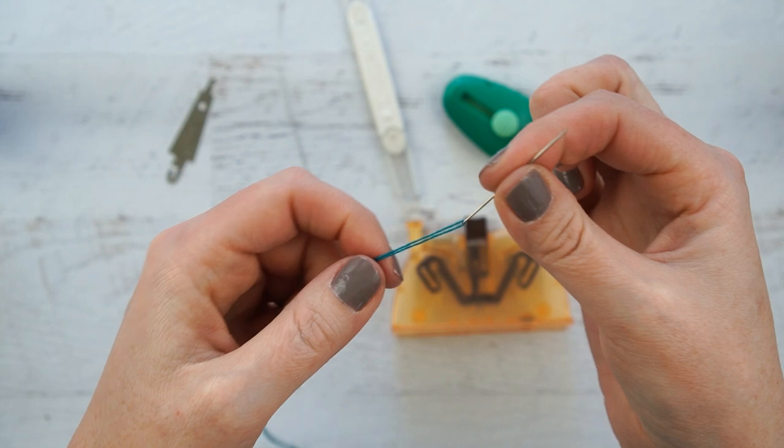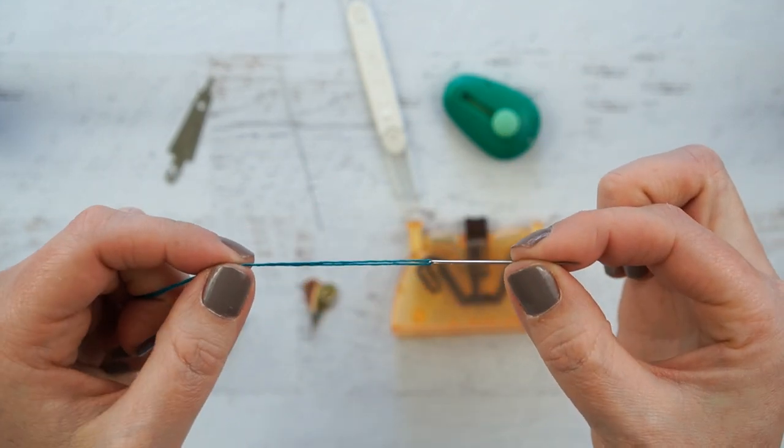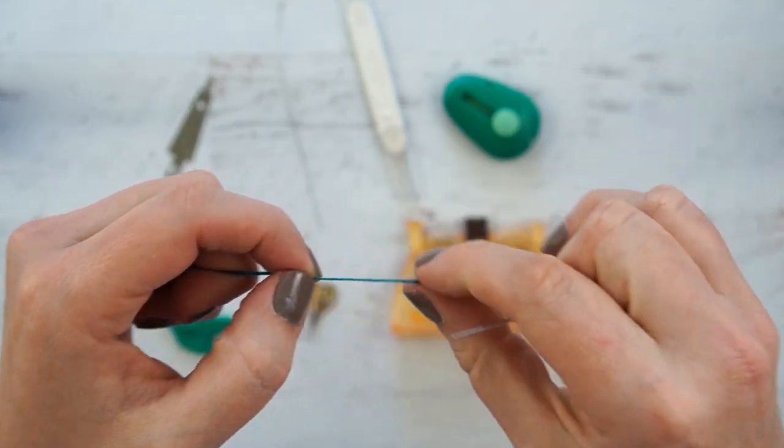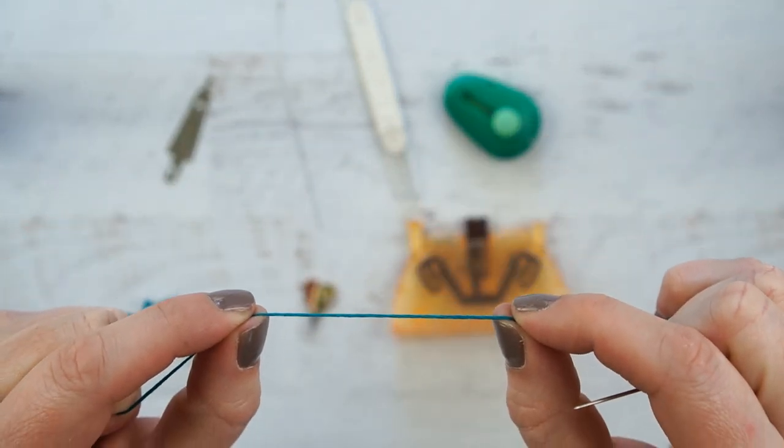And then you just tie a knot at that end. And that reduces the bulk and makes it so you only have to thread three strands of floss on your needle. But once you start stitching, tada, you have six strands of floss.